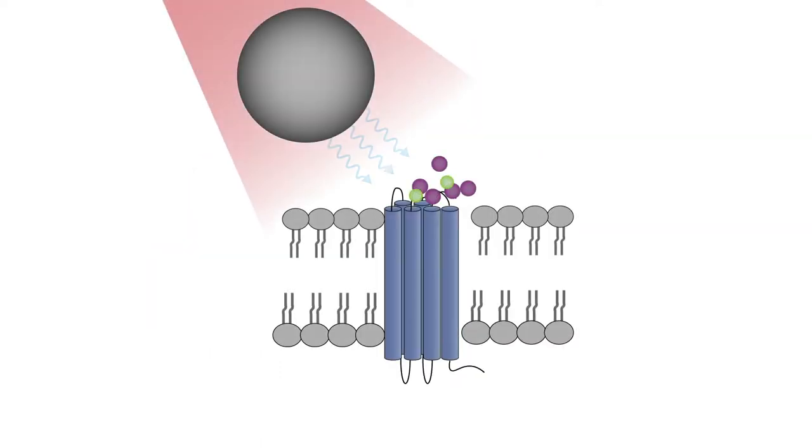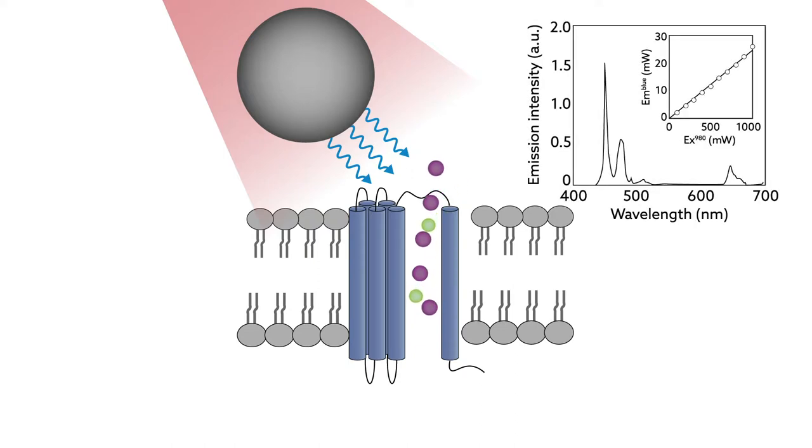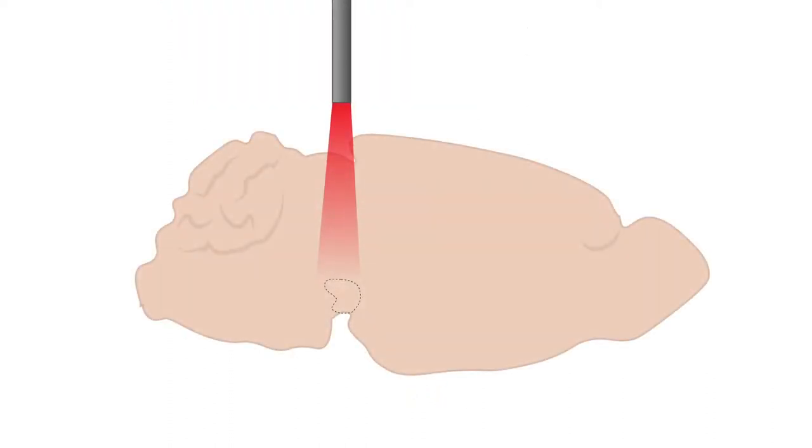The team accomplished this using a special type of nanoparticle known as an upconversion nanoparticle, so named for its ability to transform, or upconvert, near-infrared light into visible output. Near-infrared light penetrates deeply into brain tissue, but it's not transmitted at the right wavelength to activate light-responsive proteins. The nanoparticles bridge this gap by transforming near-infrared wavelengths into visible light, which can be picked up by the proteins. In this way, the particles can effectively expand the optogenetic range.